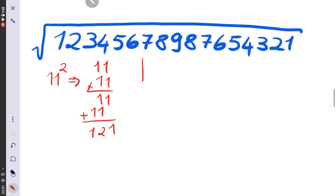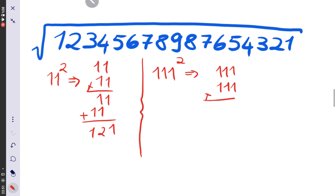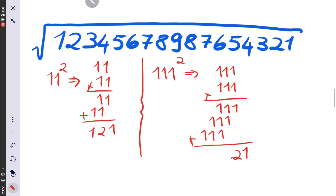Now let's see 111 squared. 111 times 111 gives us 1 2 3 2 1.